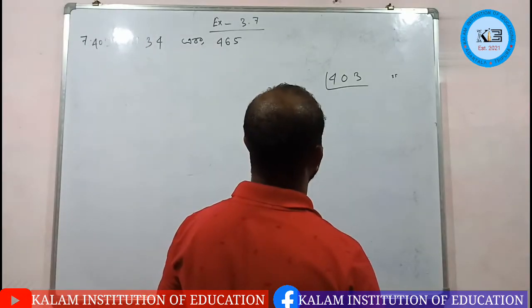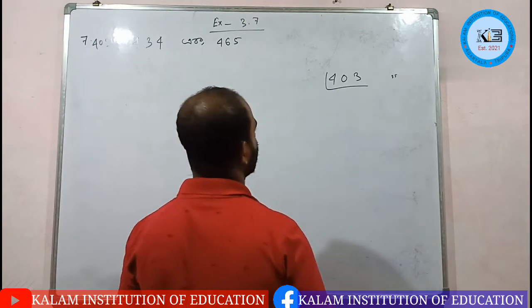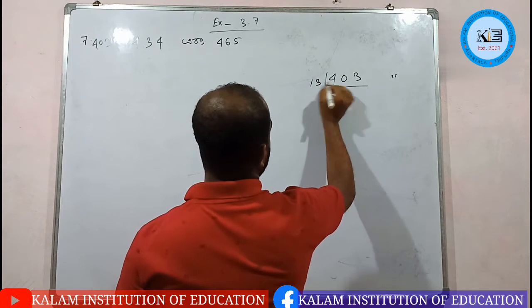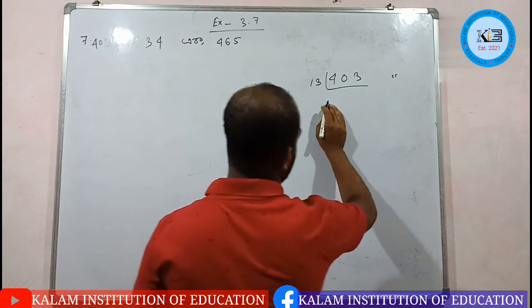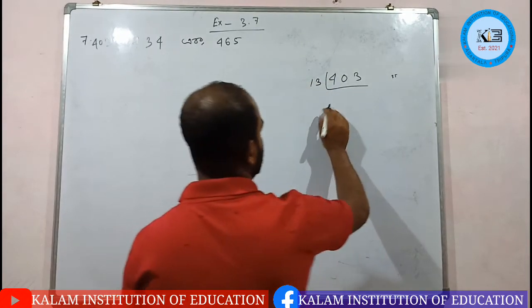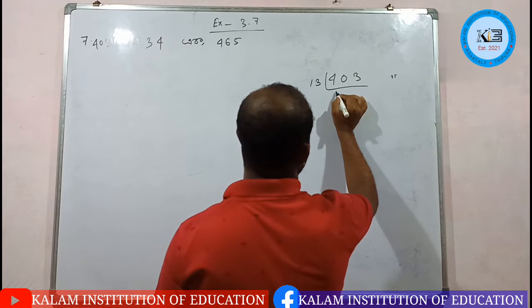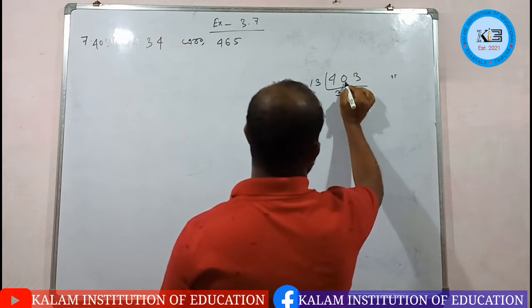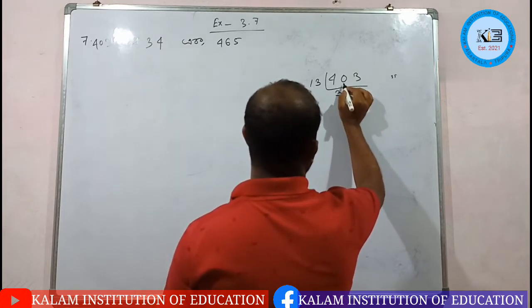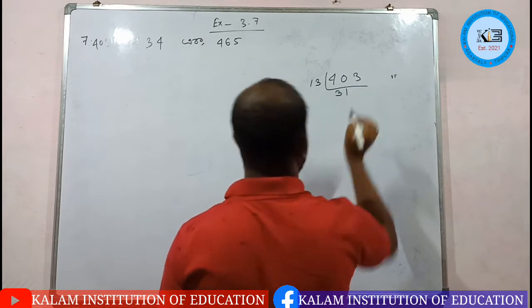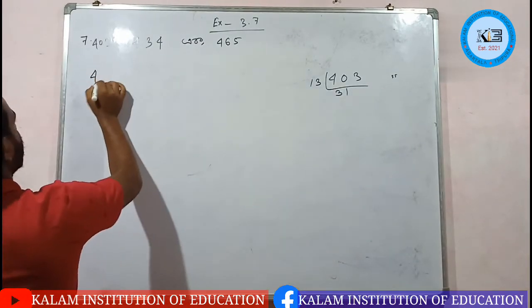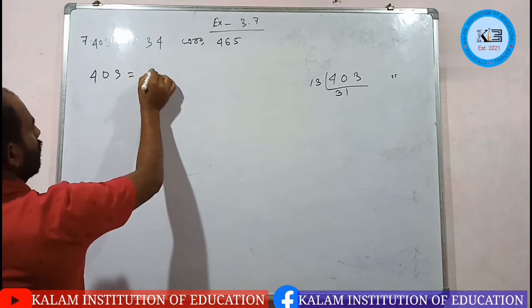So, what is 7? What is 8? 9? 11? 13? 39? 403? 303.